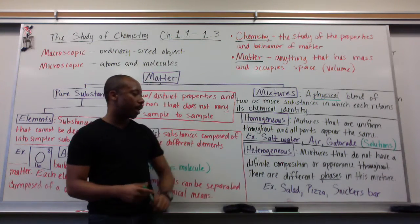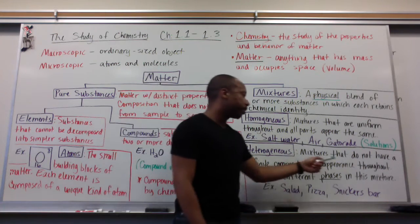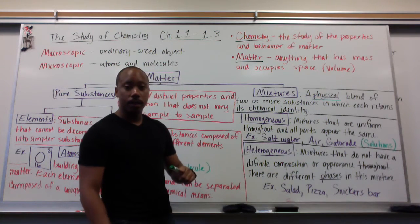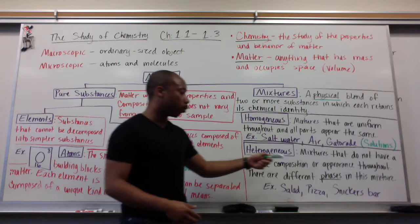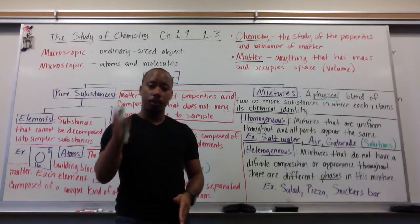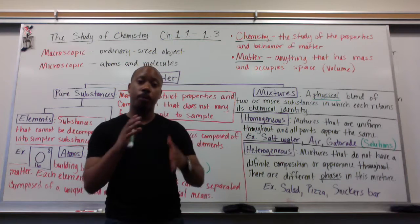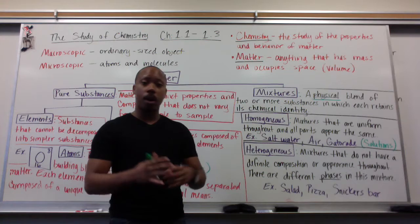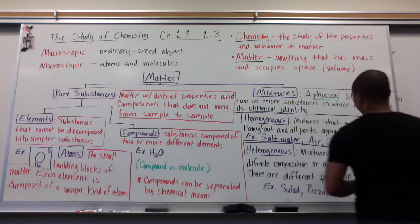The other type of mixture is a heterogeneous mixture — the root word 'hetero' means different. These are mixtures that do not have a definite composition or appearance throughout; they look different throughout and have different phases. Examples include a salad, pizza, or a Snickers bar. In a salad you can visibly point out the croutons, lettuce, tomatoes, and bacon bits. On a pizza you can see the crust, pepperoni, and sausage. You can physically see the different parts of the mixture.